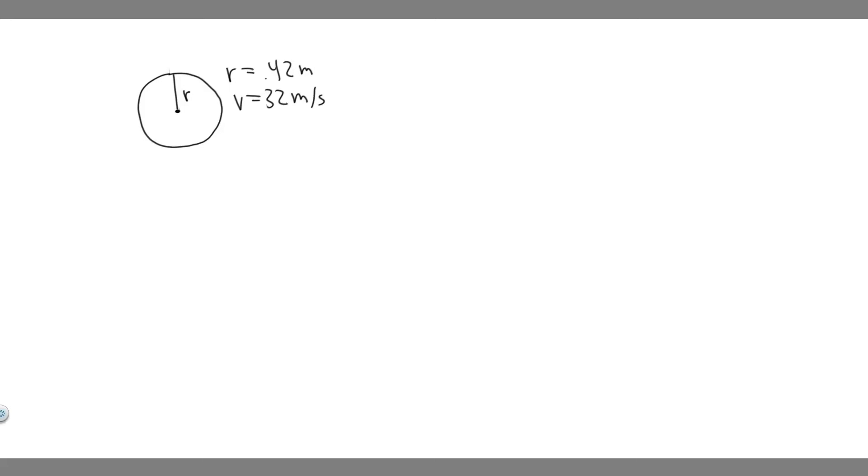In this problem, we're told a truck with 0.42 meter radius tires traveling 32 meters per second. What is the angular velocity of the rotating tires in radians per second, and what is this in revolutions per minute?